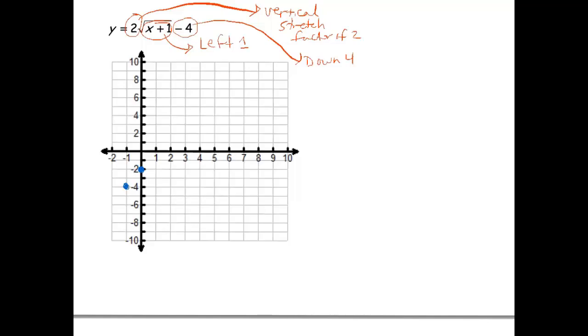Let's take the point we had at 4, 2. Left 1. Let's stretch this by a factor of 2. So our y value is 2. Getting multiplied by 2 brings us to 4. And down 4 brings us to 3, 0. So I think that's enough for us to draw our graph right here.